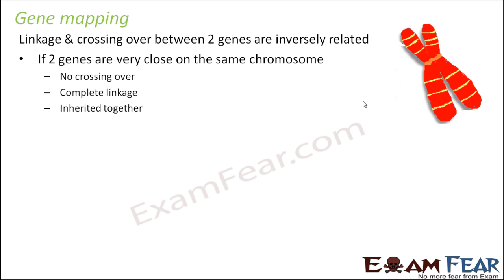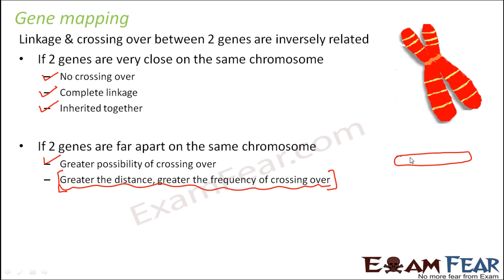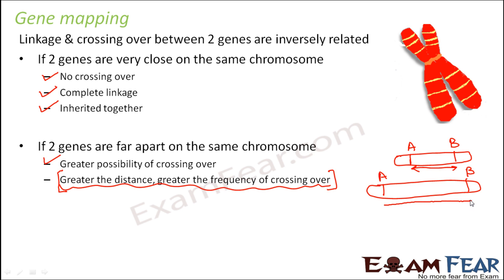If two genes are very close on the same chromosome, that is the scenario of complete linkage — there will be no crossing over, they will be inherited together, and there will be no recombination at all. Similarly, if the two genes are far apart on the same chromosome, the possibility of crossing over increases. Greater the distance between the genes, greater the frequency of crossing over. For example, if gene A and gene B are closer together versus farther apart, the distance determines the crossing over probability.